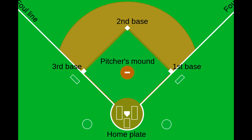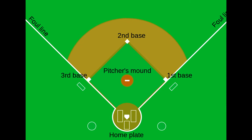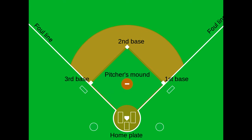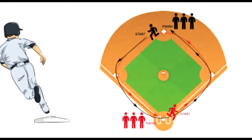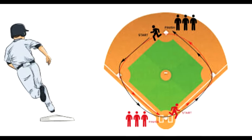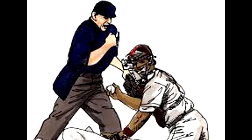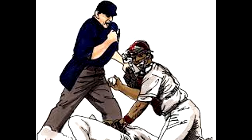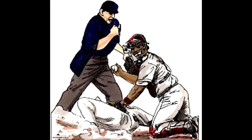Each base is named, starting with home plate at the bottom of the diamond, then proceeding counterclockwise to first base, second base, and third base. A player must touch the bases in order — first, second, third, then home — in order to score a run. The defensive team will try to prevent the players from running the bases and will attempt to cause an out. When three outs are recorded, the teams will switch sides.